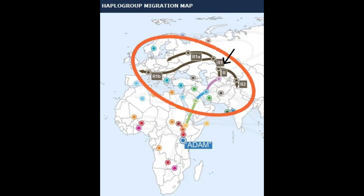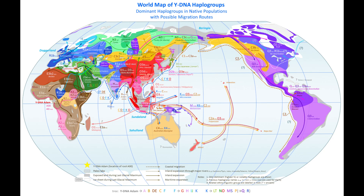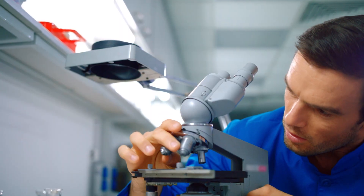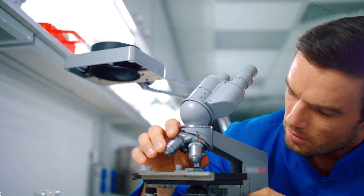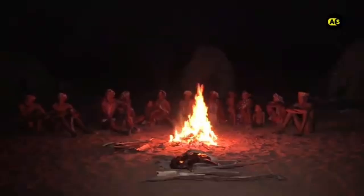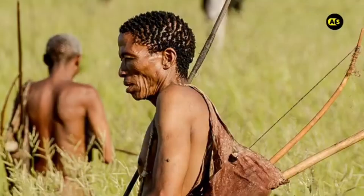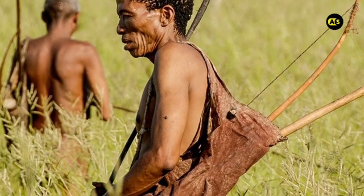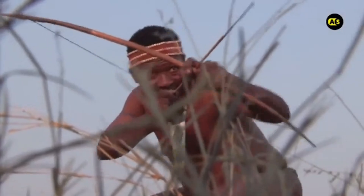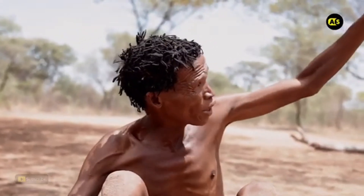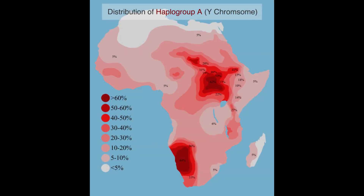Everyone with haplogroup R is a descendant of one man who lived in Central Asia around 27,000 years ago. All over the world there are plenty of different haplogroups and subclades. You can research your own haplogroup and trace your ancestry back to a proposed specific region and time. There's a lot of research being done, so with time more theories and archaeological evidence may shift where these migrations happened. The cool thing about haplogroups is that it all goes back to one ancestor hundreds of thousands of years ago — because haplogroups descend from older haplogroups, and we can trace it back to Africa.